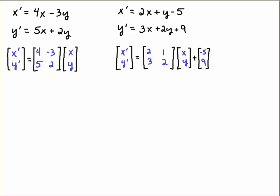Again you can see what's happening here. If you do the matrix vector multiply, x primed is equal to 2x plus y minus 5. That's the top equation. Likewise 3x plus 2y plus 9 is the bottom equation.